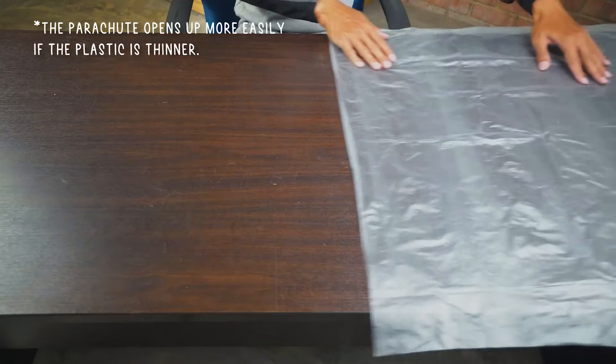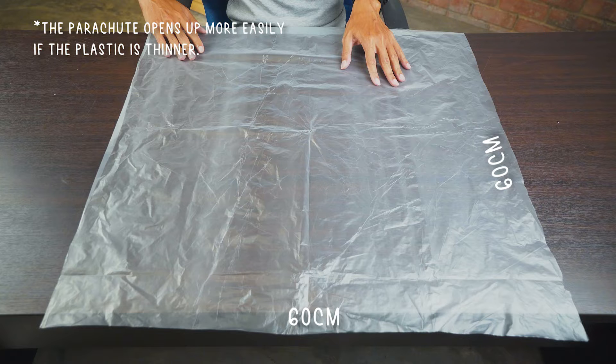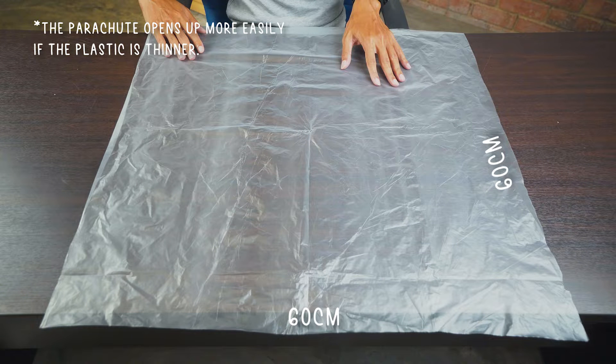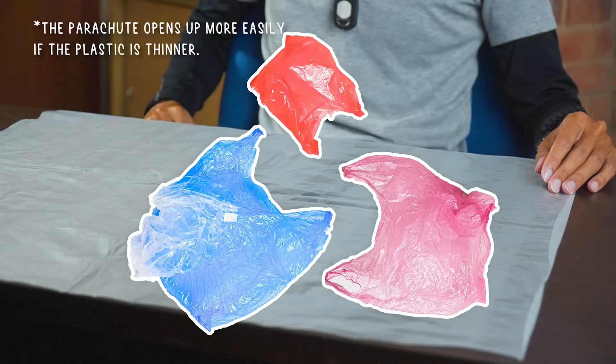Here's what we need. One square plastic sheet that is 60 by 60 centimeters. You can cut it out from garbage bags or plastic bags.